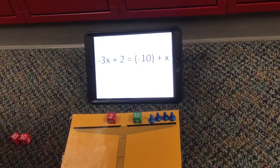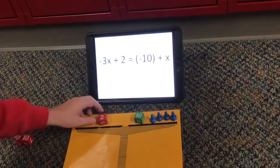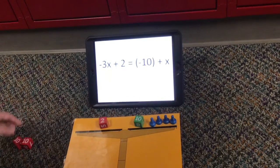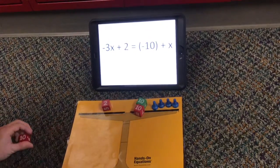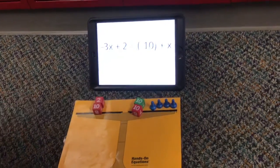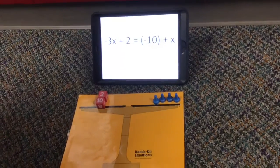And then now to get rid of this negative 10 so we have something on this side, we can't get rid of the 2. So we have to add positive 10 so we can get rid of that to each side. Now we can take this away because it's a pair of zero.